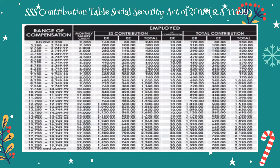Looking at the revised 2021 SSS schedule: as your salary grows, your contribution increases. For example, if your salary is ₱19,700 and above, the employer contribution amounts to ₱1,600, while your monthly deduction as employee is ₱800 — totaling ₱2,400, which is equivalent to 12% of the monthly credit. The employer also pays an EC (Employees' Compensation) contribution of ₱30.